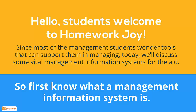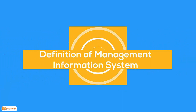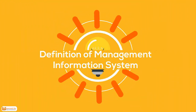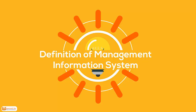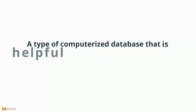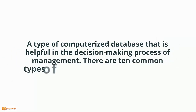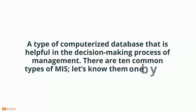So first, let's know what a management information system is. Definition of Management Information System: a type of computerized database that is helpful in the decision-making process of management. There are 10 types of MIS; let's know them one by one.